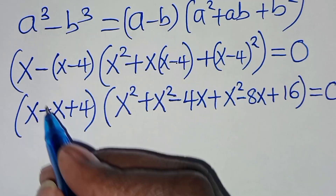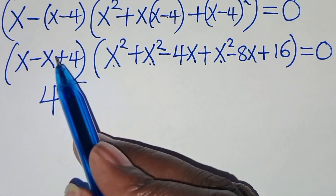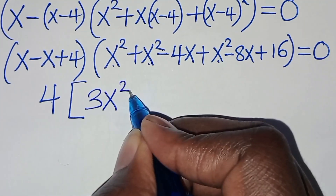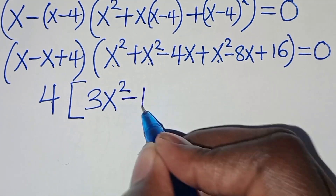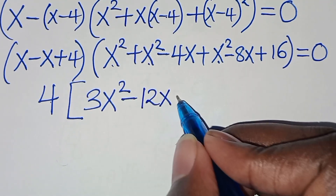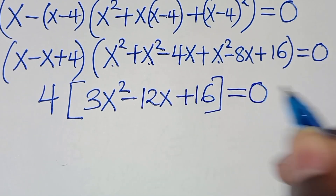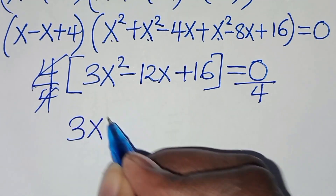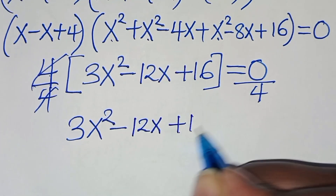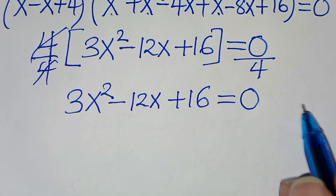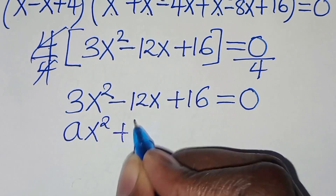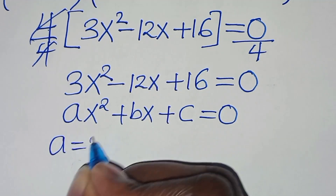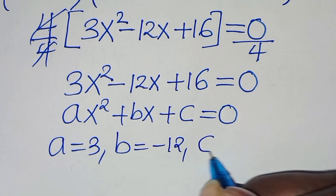From the first factor, x minus x gives 0, so we get 4 from that part. Combining in the second factor: x squared plus x squared plus x squared gives 3x squared; minus 4x minus 8x gives minus 12x; then plus 16. So we have 4 times (3x² - 12x + 16) equal to 0. Dividing both sides by 4, we get 3x² - 12x + 16 = 0. This is a quadratic equation where a equals 3, b equals minus 12, and c equals 16.